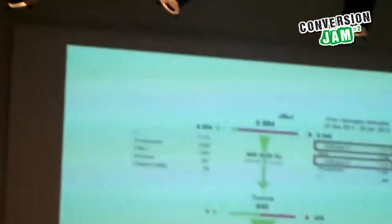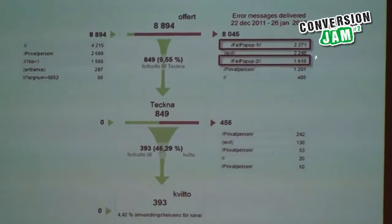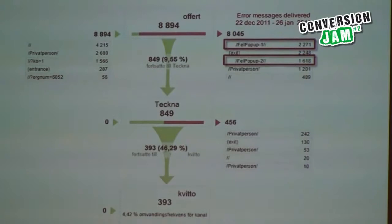What happened was that the validation of the personal number, instead of saying "this is not the way to do it," it said "site is down, come back later." These are the effects: as you can see, there were 8,000 people coming to this step. Of those, 2,000 got this error message — which was actually not a real error. Those two error messages together make 4,000 — almost half of visitors got those two error messages which didn't have to be there. When we found it, it took just a couple of days to fix and then conversion rates started going up. Tracking your error messages in Google Analytics is one of those long-tail conversion things you can do.